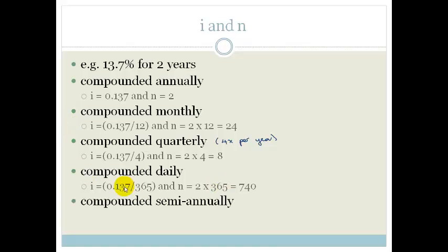Moving on, if it's compounded semi-annually, you have that it's compounded twice a year. So therefore we're dividing it by two, and we are multiplying it by four.